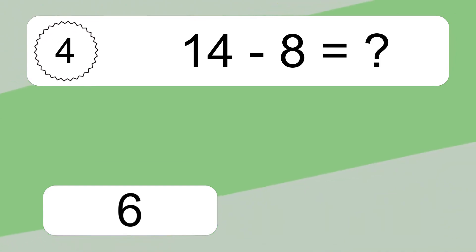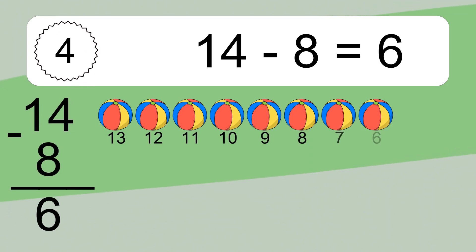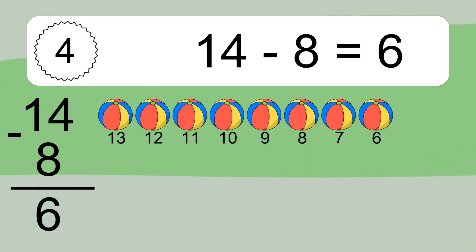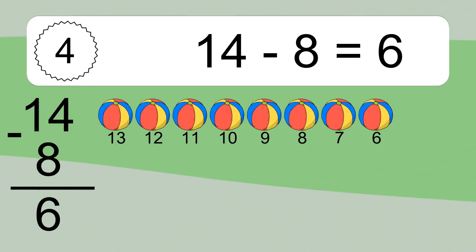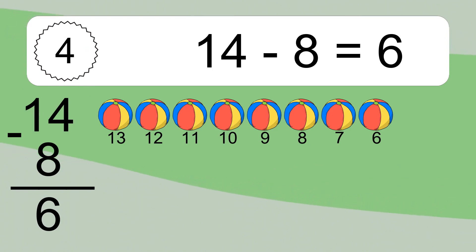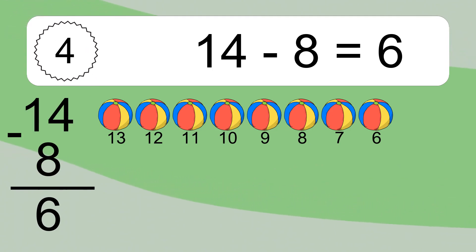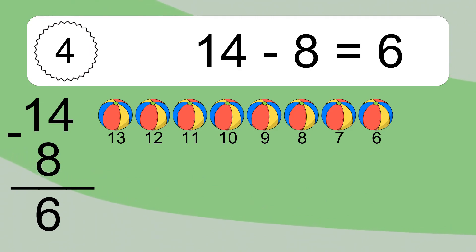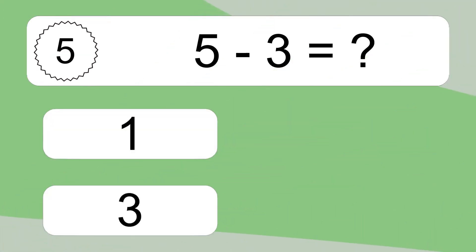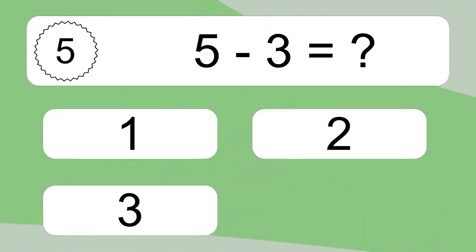14 minus 8 equals what? 14 minus 8 equals 6. Let's count it: 13, 12, 11, 10, 9, 8, 7, 6.